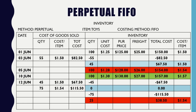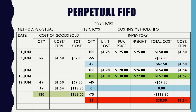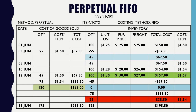We sum up our totals: we sold 120 items costing a total of $183. At the end of June 15th, we should have a total of 125 items, which we do — we have our red batch and green batch. Adding those together, total ending balance is $195.50. And for cost of goods sold: from June 1st through June 15th, I sold 170 items total costing $265.50.